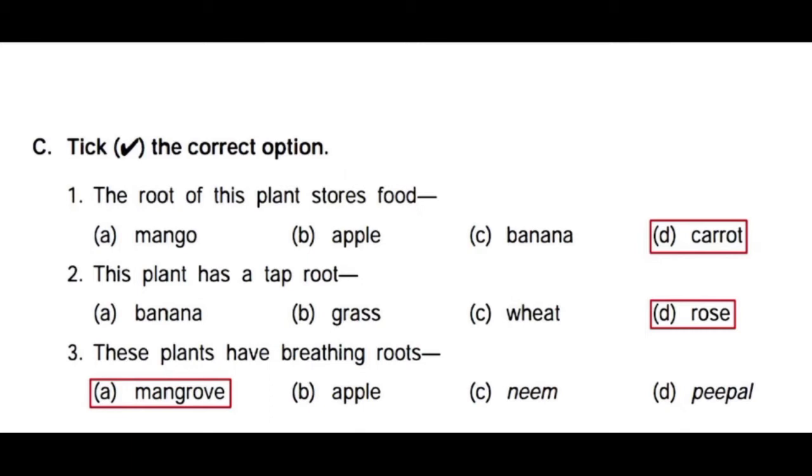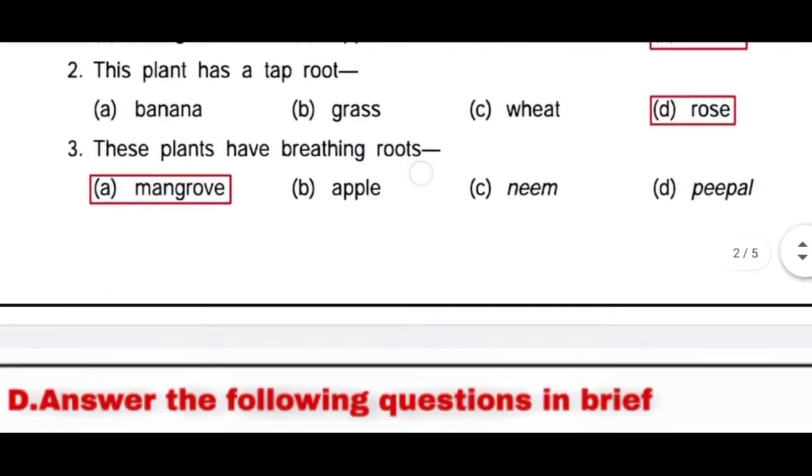Second is: This plant has a tap root - Banana, Grass, Wheat, Rose. The answer is Rose, because Rose has a tap root. Third is: These plants have breathing roots. The answer is mangrove, because mangrove plants have breathing roots.